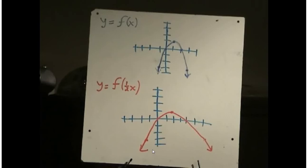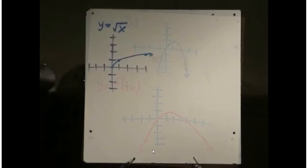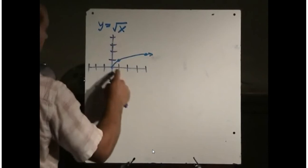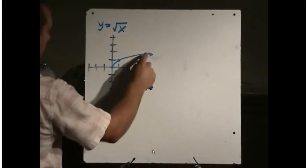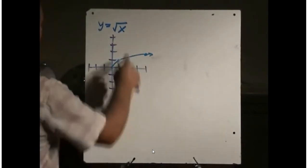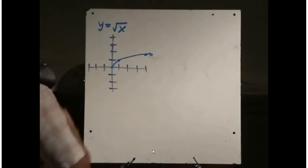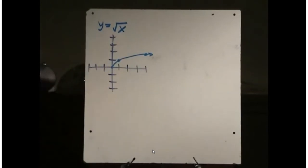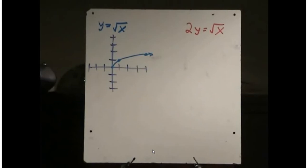Now let's look at vertical expansions and compressions. Here's a function y equals the square root of x with key points: (0, 0), (1, 1), and (4, 2). We've seen what happens when we replace x with 2x or one-half x. What happens if we replace y with 2y or one-half y? When I replace y with 2y, the equation becomes 2y equals the square root of x.